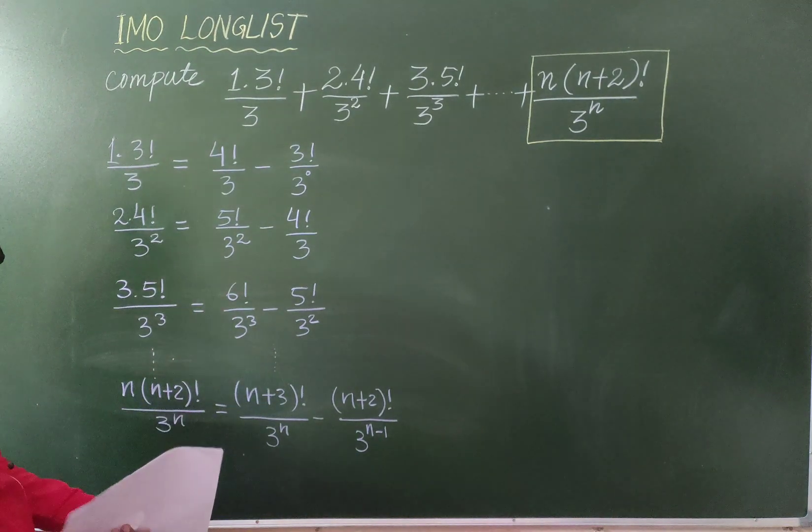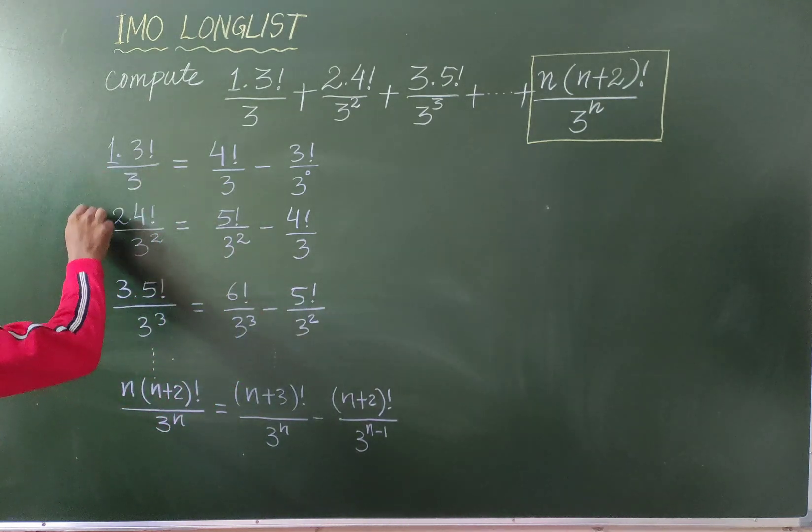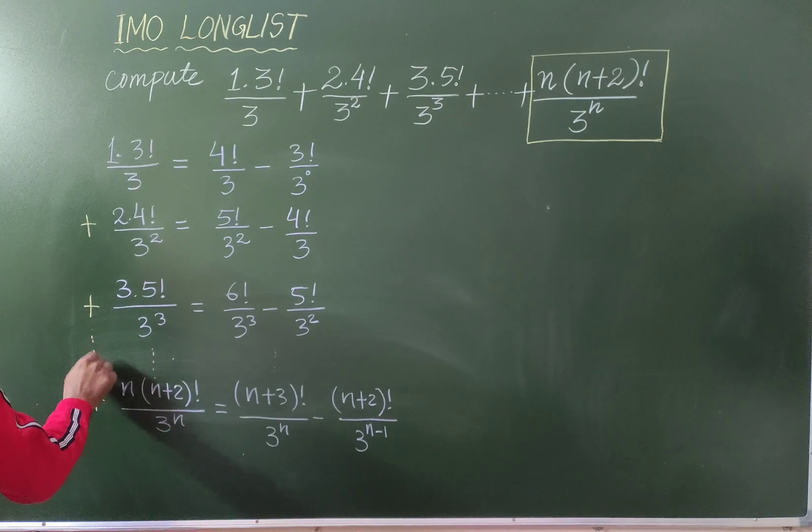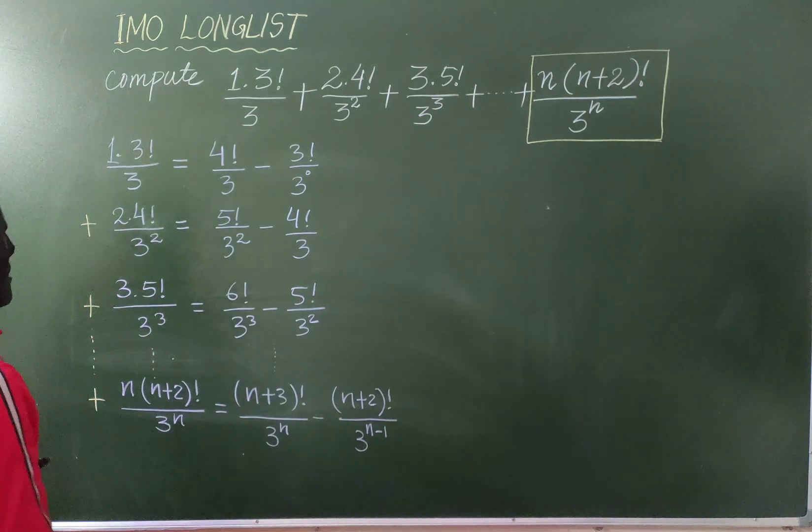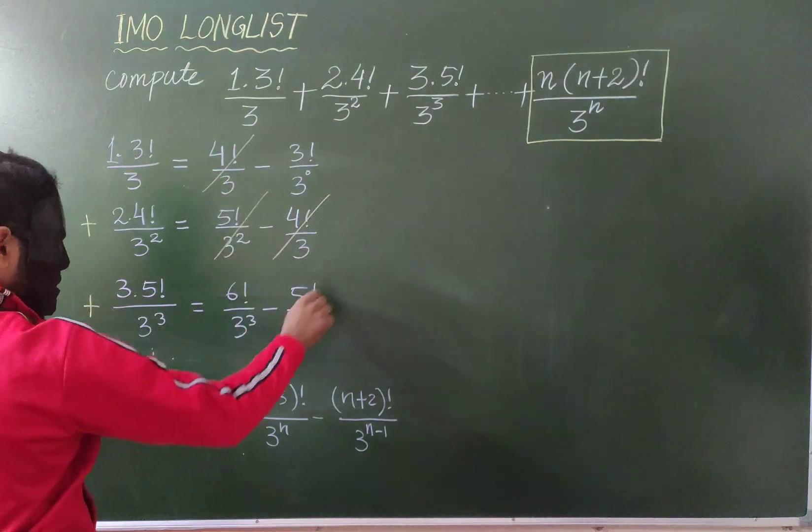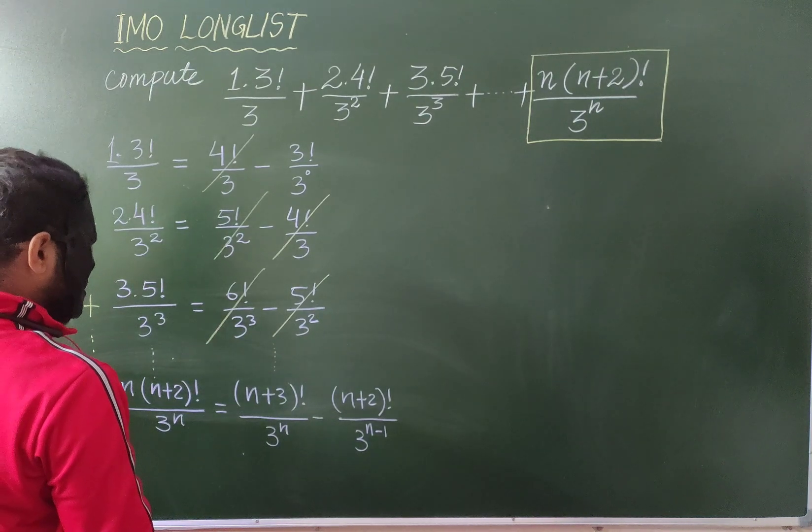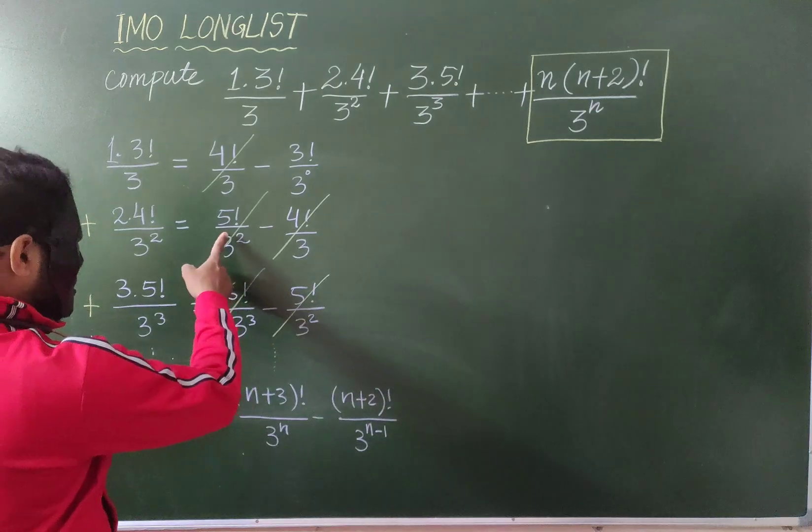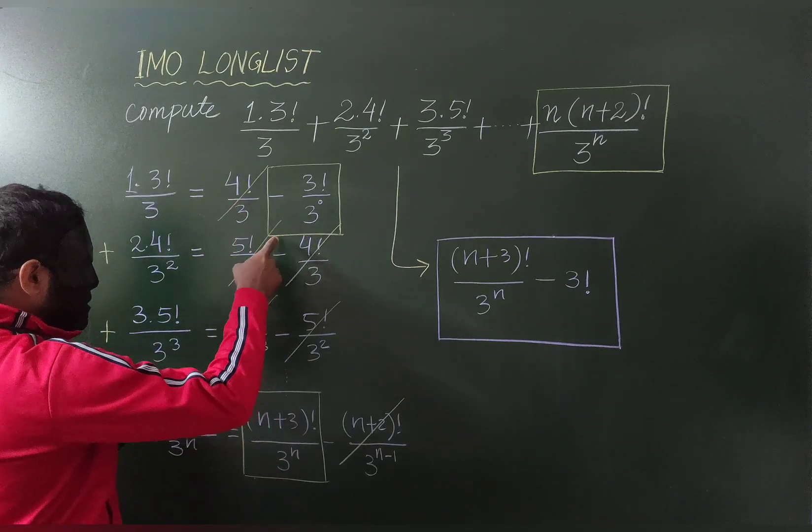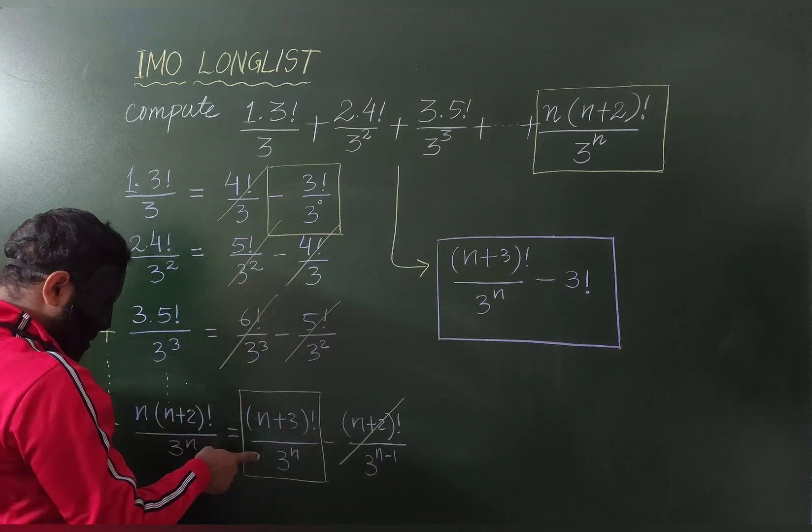So you can see now here every single term can be evaluated like this and if you add everything all the way up to n term then they are going to cancel each other except first one continuously. So here you can see everything will cancel out with each other leaving the second term and the last term of the nth term.